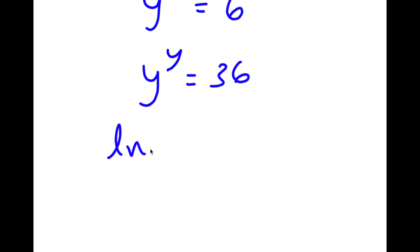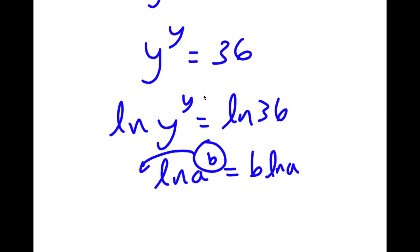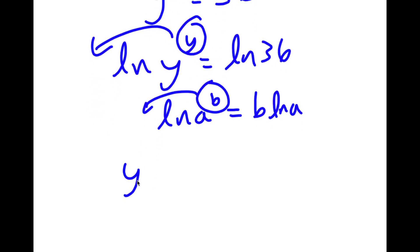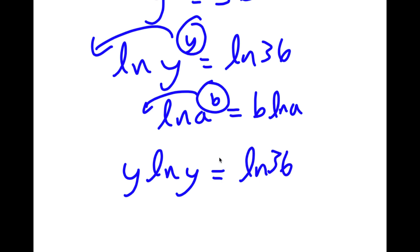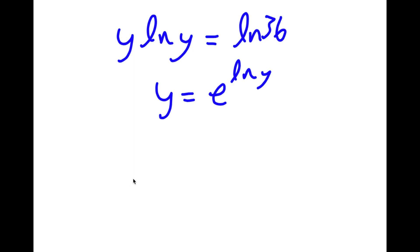Now if I take the ln on both sides, I get ln of y to the power of y is equal to ln 36. And now if I have something in the form ln a to the power of b, I can move this exponent of b to the front, so that equals b times ln a. So in this case, I can move y to the front, giving me y times ln y is equal to ln 36. Now y is the same thing as e to the power of ln y because the e and ln cancel out. So I'm going to replace y with e to the power of ln y.